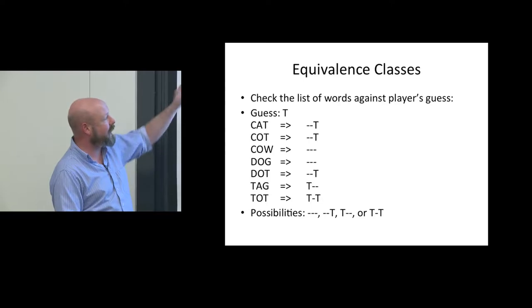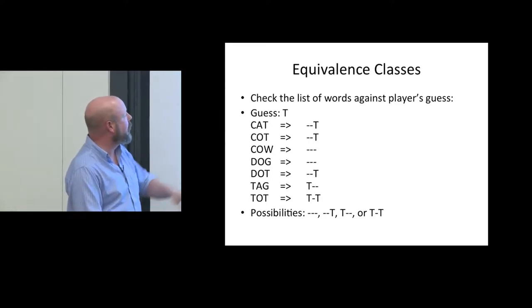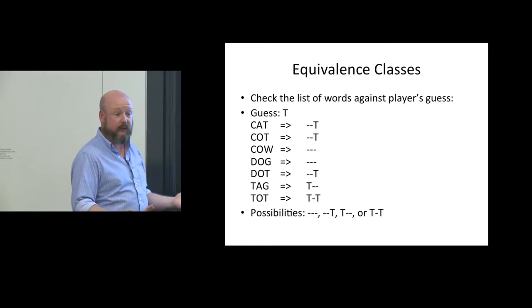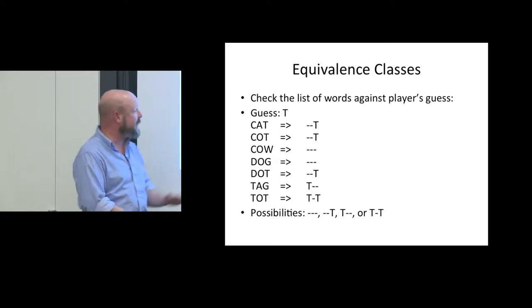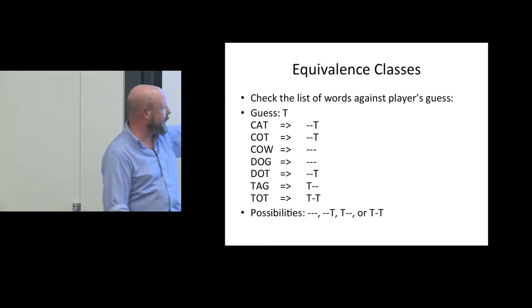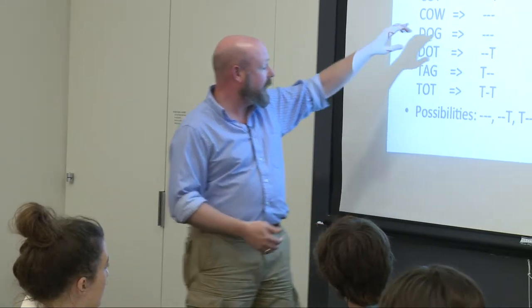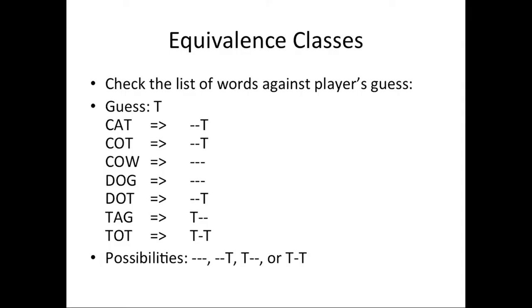For each of the words, we can map what that guess would do to what the board would look like at that time. If the word was cat and they guessed T, they would get a T in the third location and the first two would still be blank. If the word was cow and they guessed T, they wouldn't have any letters matching yet. If the word was tot, they would get T-dash-T. So the possibilities after all this are: dash-dash-T, dash-dash-dash, T-dash-dash, or T-dash-T.